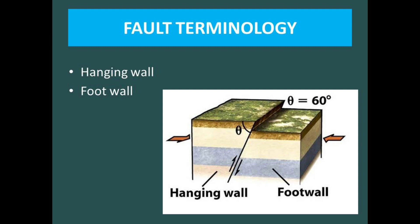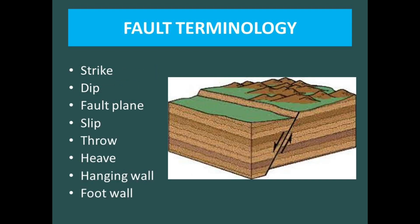The other two components are hanging wall and footwall — these are the blocks of faults. The upthrown block is called the hanging wall block and the downthrown block is called the footwall block. These are the main components of a fault.